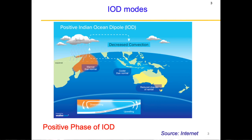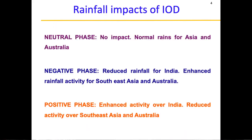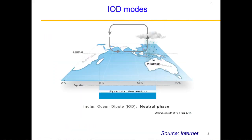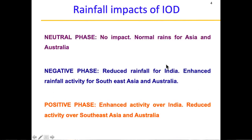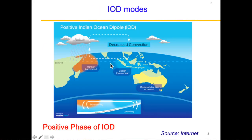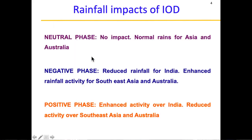What are the rainfall impacts of these IOD phases? During the neutral phase there is no anomalous impact — normal rainfall for Asia and Australia. During the negative phase, the Walker circulation strengthens in the East Indian Ocean, so Southeast Asia and Australia receive more rain due to strong convection there. During the positive phase of IOD, there is enhanced rainfall activity over India because the warmer pool resides near the West Indian Ocean, providing a large moisture flux to India. Meanwhile, Southeast Asia and Australia experience reduced rainfall or drought-like conditions during the positive phase.